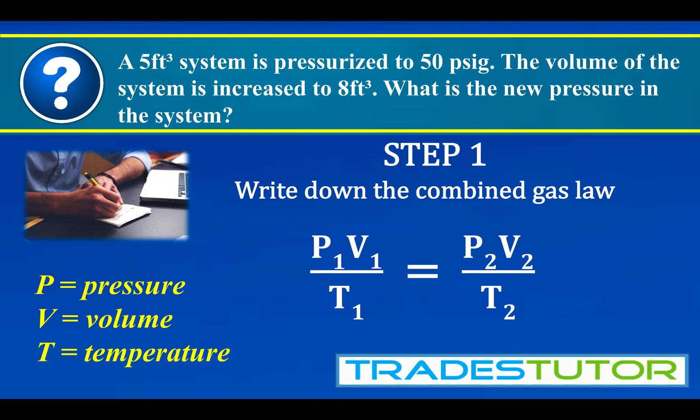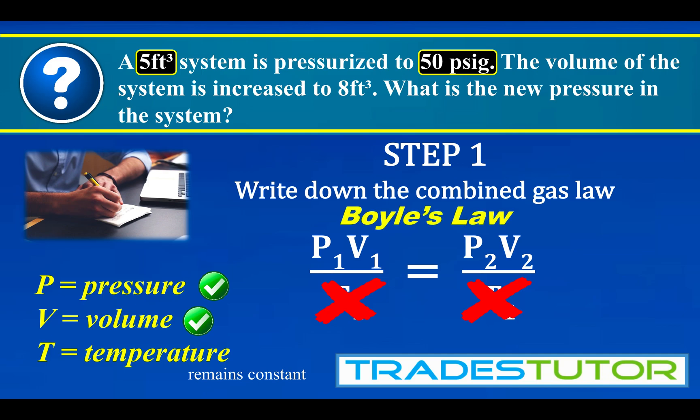So what we want to do is we want to read this question and find out if we have all of the variables in the question or just some of them. So the first thing, the five cubic foot. Well, that is volume, so we have volume. Then we move on and we see 50 pounds per square inch gauge. That is pressure. But what we notice we don't have is anything to do with temperature. So in this case, the temperature is the same in the beginning and the end. It's going to remain constant. So if we look at the combined gas law, we can essentially remove the temperature.